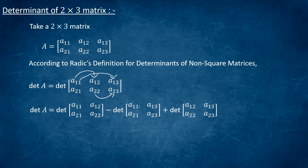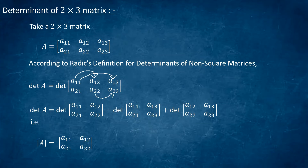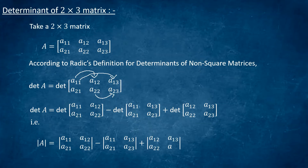This determinant in Lehman's form can also be written as: the determinant of A equals the determinant of [a11, a12; a21, a22] minus the determinant of [a11, a13; a21, a23] plus the determinant of [a12, a13; a22, a23]. Now we will take an example of a 2×3 matrix and apply Roddick's definition.